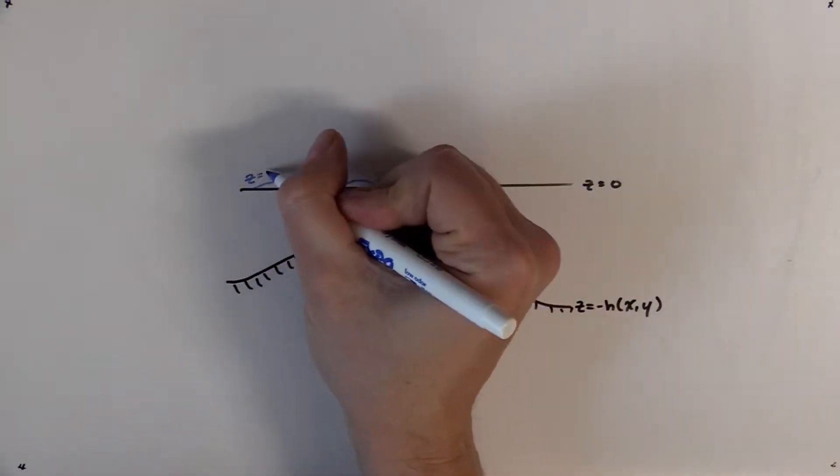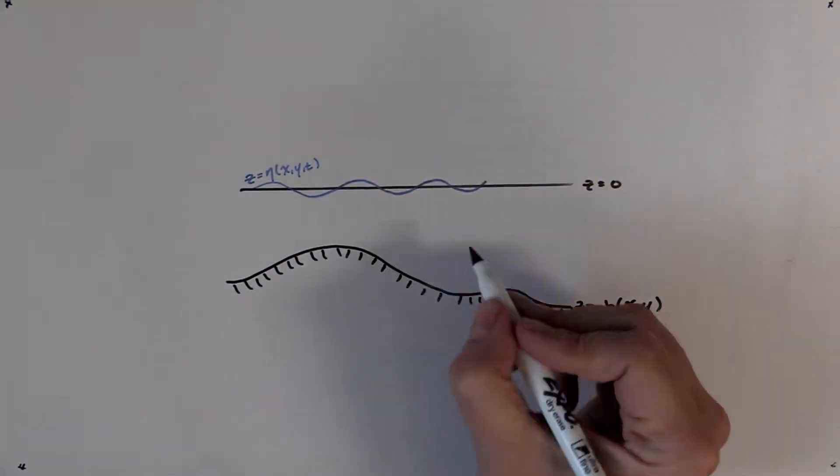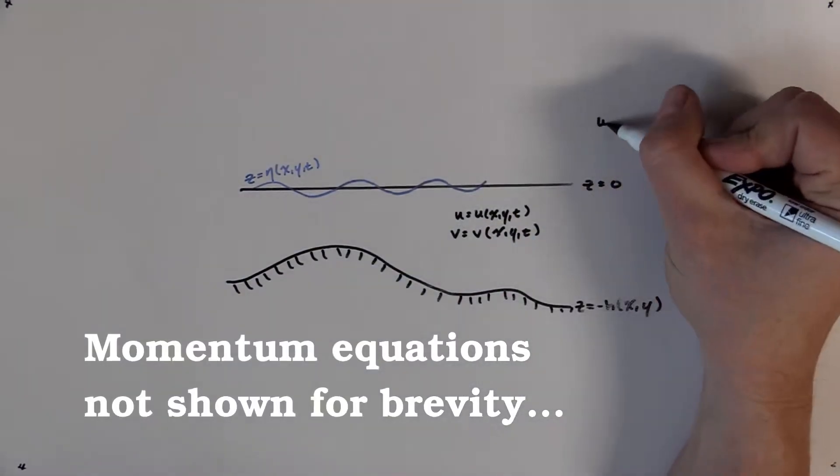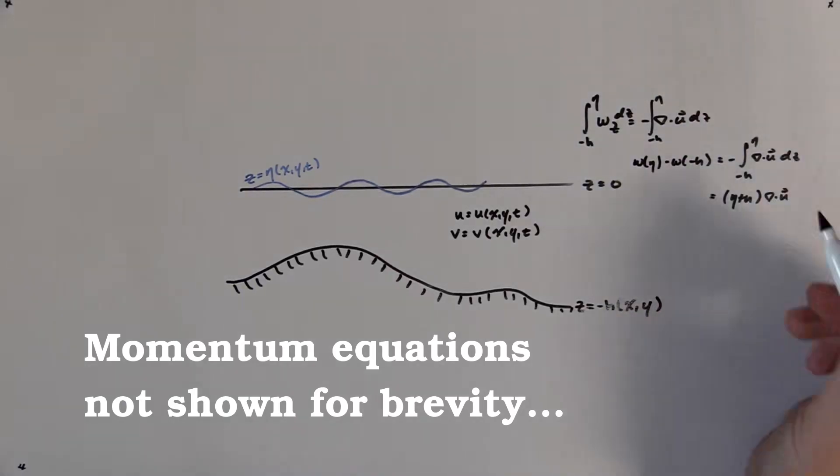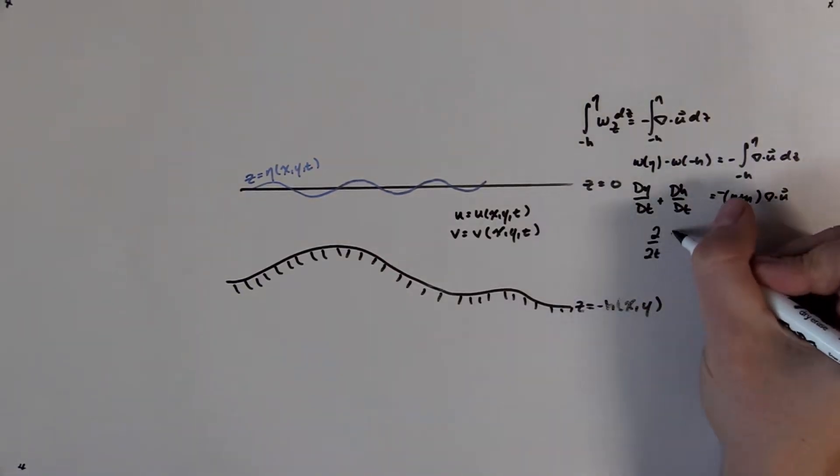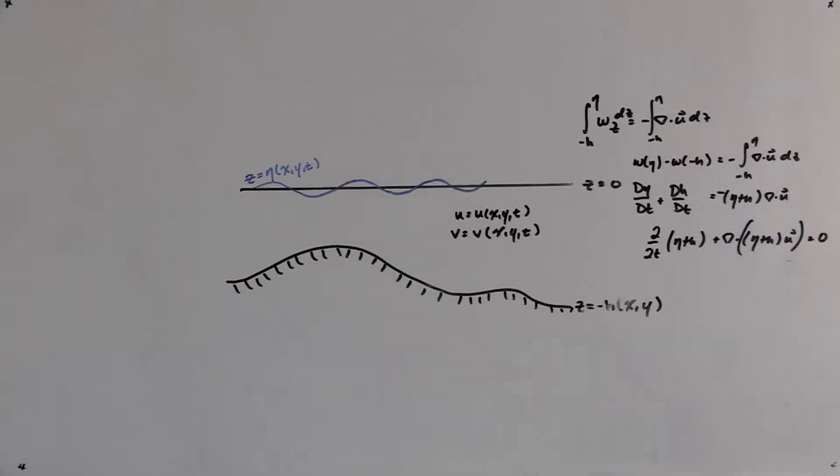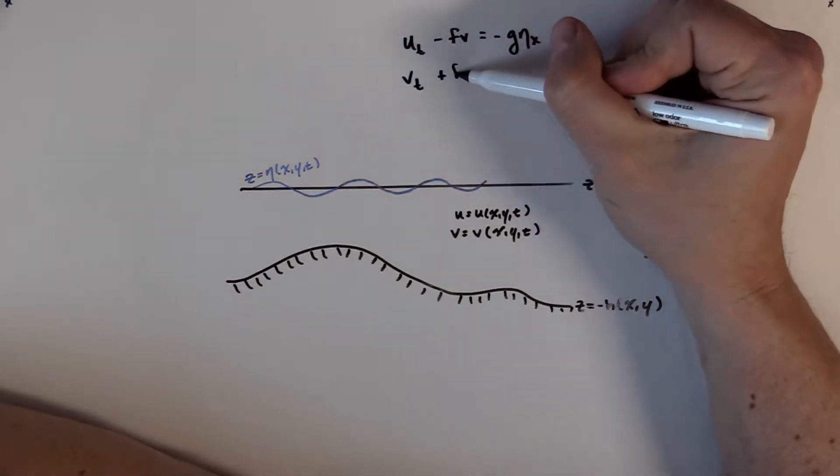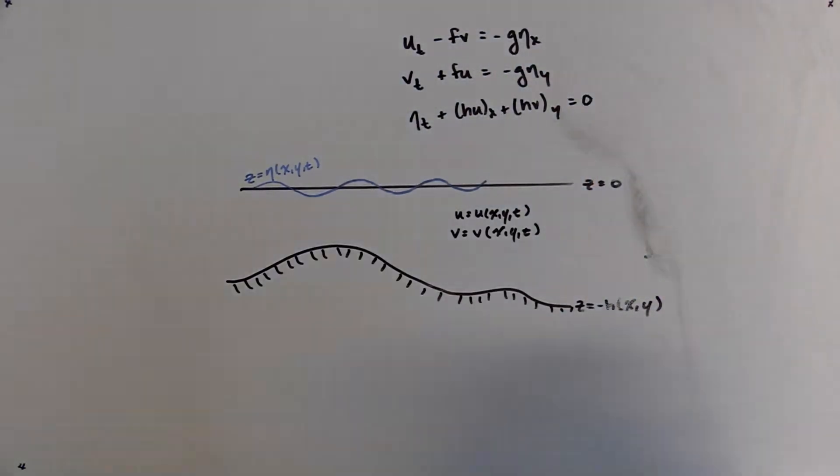To really make the problem simpler, we consider flows that have lateral velocity components that are uniform top to bottom. If we integrate the F-plane hydrostatic primitive equations over the depth and apply no-normal flow boundary conditions at the fluid free surface and at the seafloor, we arrive at the non-linear shallow water equations. Last, for slow enough flows, we can linearize about a motionless state to get what's called the linear shallow water equations.